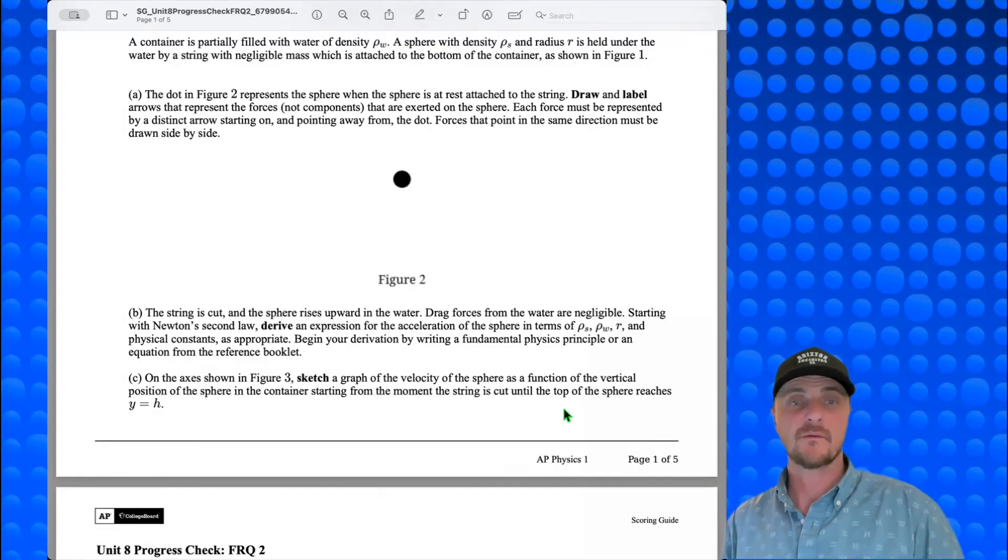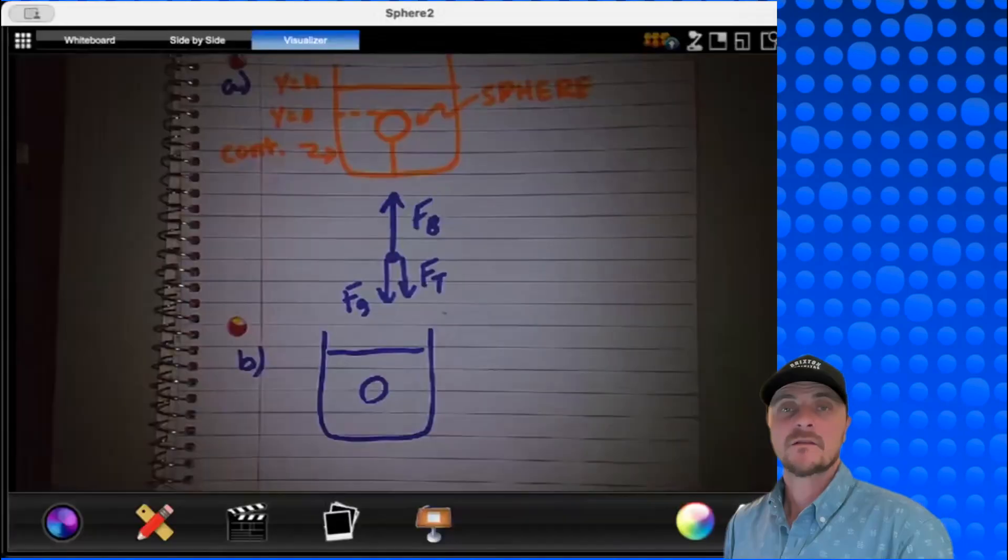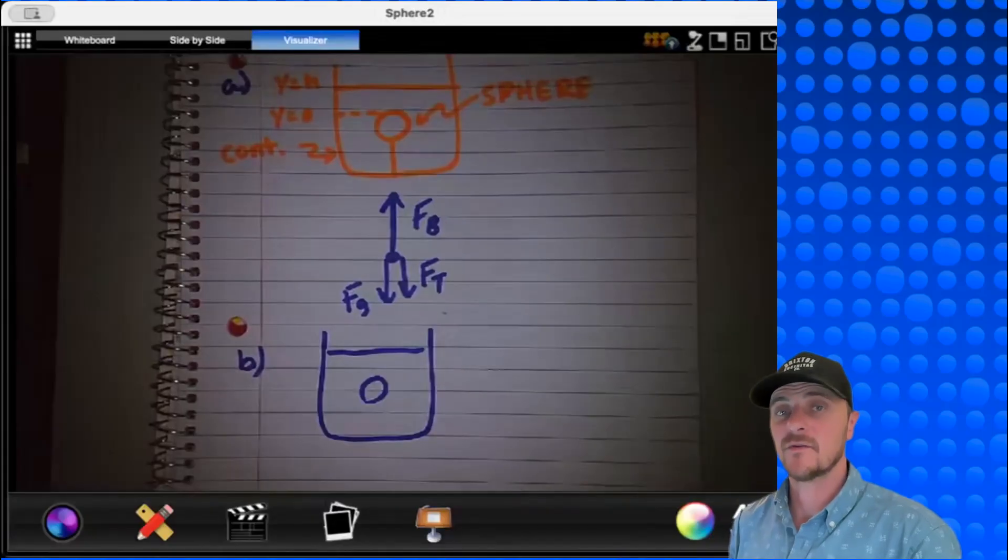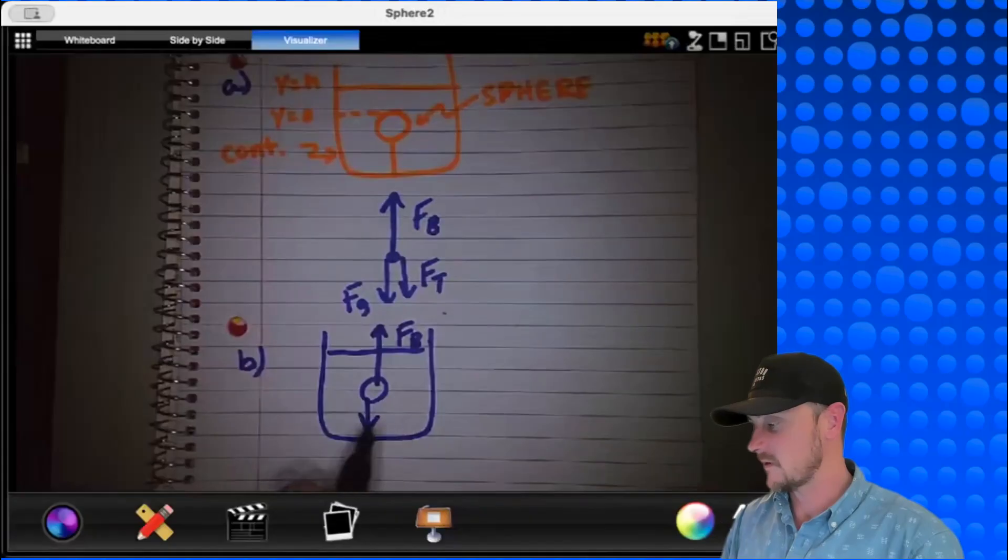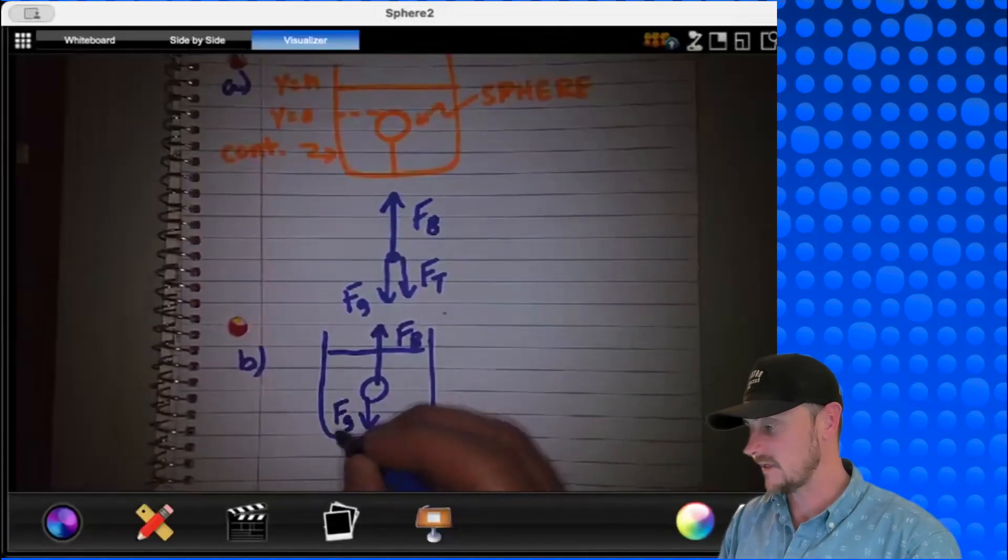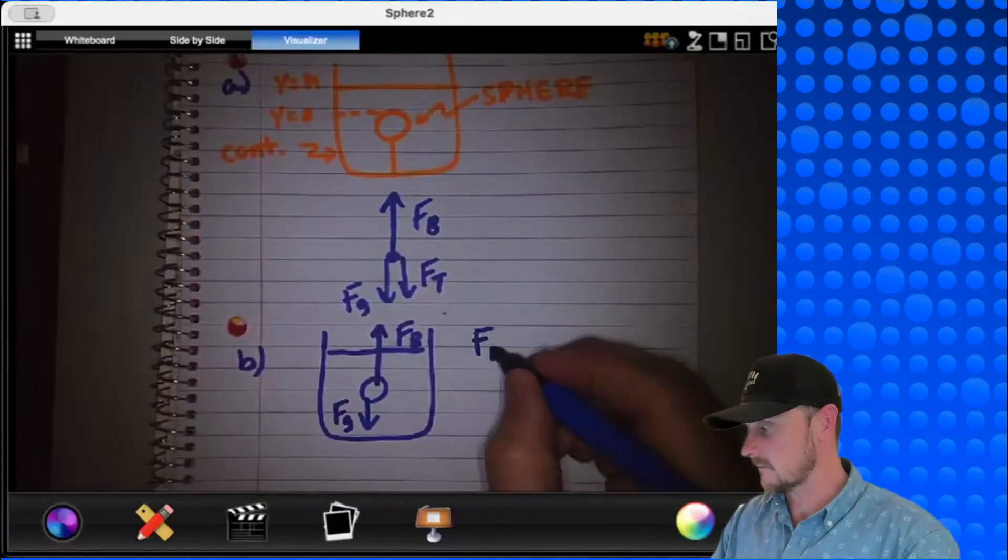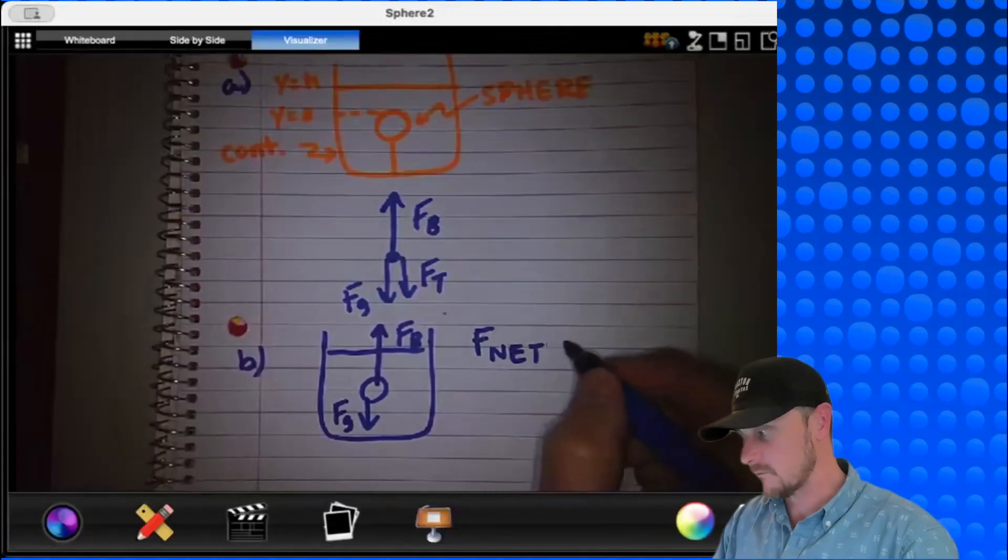Part B: the string is cut and the sphere rises upward in the water. Drag forces from the water are negligible. Starting with Newton's second law, derive an expression for the acceleration of the sphere in terms of rho s, rho w, r, and physical constants as appropriate. Begin your derivation by writing a fundamental physics principle or an equation from the reference booklet. So what are the parameters now that the string is cut? We still have the same buoyant force that was acting in Part A, and we still have the same gravity because it's the same mass. And if they want us to write Newton's second law, no problem, that's F_net equals ma.